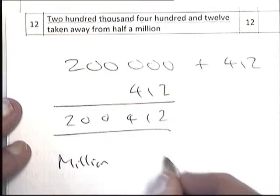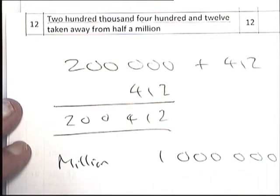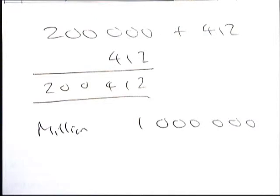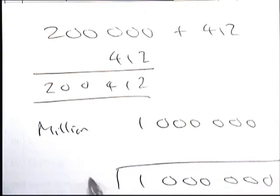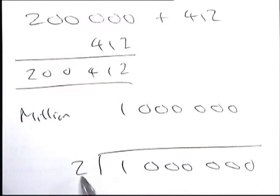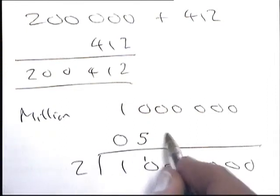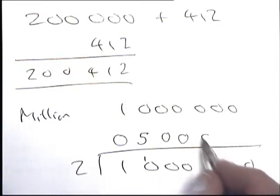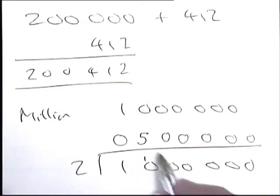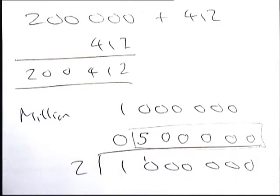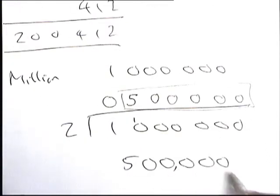Half a million: one million has six noughts, so one million is 1,000,000. To find half, divide by 2. 2 into 1 won't go, carry 1; 2 into 10 goes 5; the rest are zeros. So half a million is 500,000 — a 5 followed by five zeros.